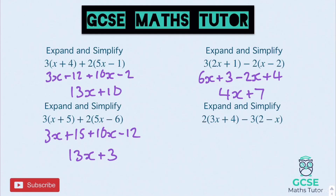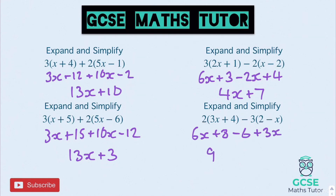Collecting the x terms: 6x take away 2x is 4x, and 3 plus 4 is 7, so 4x plus 7. The last one: 2 times 3x is 6x, 2 times 4 is 8. Then negative 3 times 2 is negative 6, and negative 3 times negative x is positive 3x. Tidying up: 6x and 3x makes 9x, and 8 take away 6 is 2, so 9x plus 2.